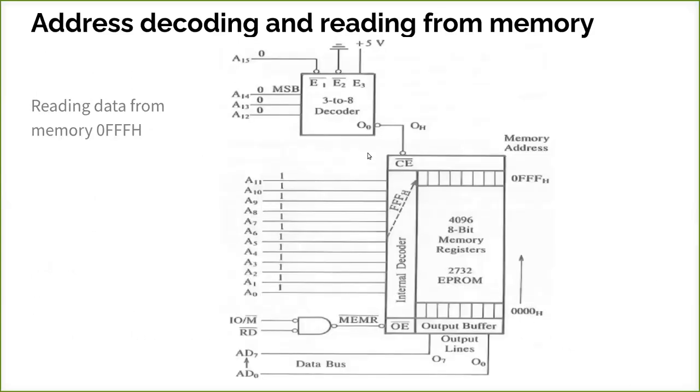Now, address decoding and reading from memory. The same figure whatever you have seen previously, that is what is given here. If you want to read this, then you have to place all one and here you have to put 0. For that, 0FFFH - this particular address, this will be selected and the data will be read and it will be fetched from that location.